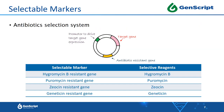To select the plasmid with target gene expression, an antibiotic selection system is applied. When constructing the plasmid, both the target gene and the antibiotic resistance gene are driven by the same promoter. A plasmid expressing the target gene can then be selected by antibiotic resistance. A variety of antibiotic-resistant selectable markers are used across different products, including hygromycin-B-resistant gene, puromycin-resistant gene, zeocin-resistant gene, and geneticin-resistant gene.